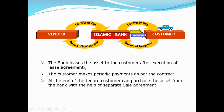The bank then leases the asset to the customer after the execution of the lease agreement. As seen, the vehicle passes from the vendor to the bank, and then the bank gives it to the customer. The customer makes rental payments as per the contract. At the end of the tenure, the customer can purchase the asset from the bank through a separate sale agreement, whereby the title and ownership are transferred to the customer.